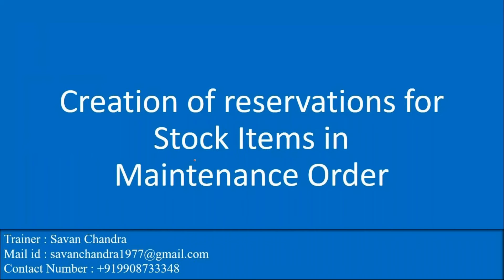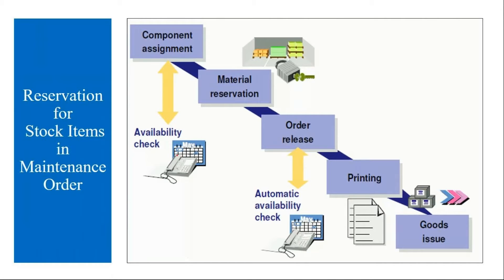The first topic is creation of reservations for stock items in the maintenance order. From the PM side, whenever they want to repair a machine or equipment, they create a maintenance order. In the maintenance order, for the repair activity they need some materials — spare parts like nut, bolt, gaskets. When they assign these in the maintenance order, if it is a stock item, the system automatically creates a reservation. I will show you this in the system.